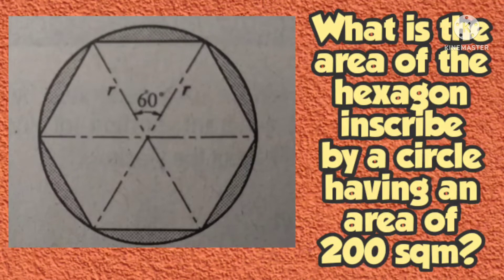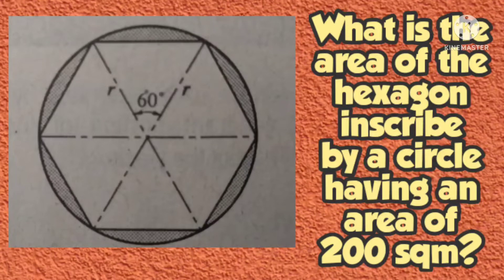Welcome again to Algem Civil Engineering. Today we are going to solve a problem on geometry. The problem is: what is the area of the hexagon inscribed by a circle having an area of 200 square meters?